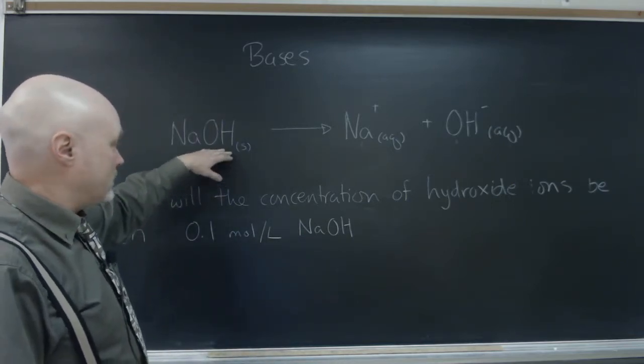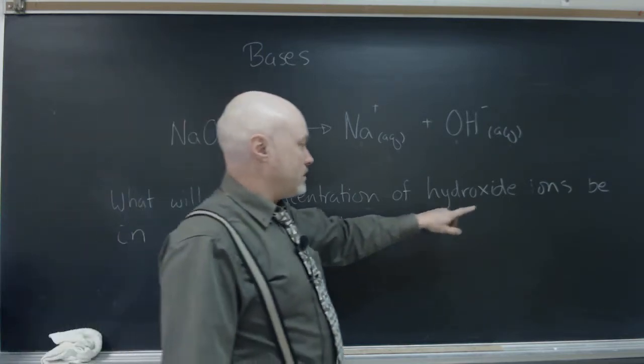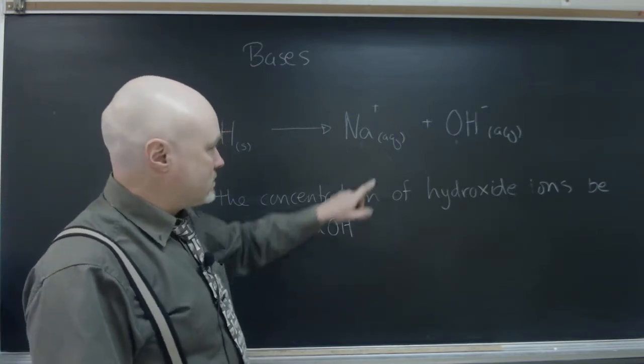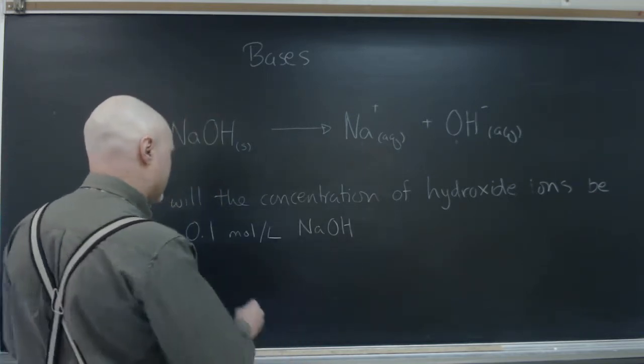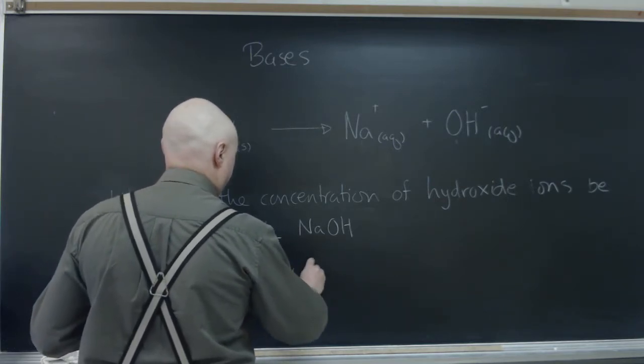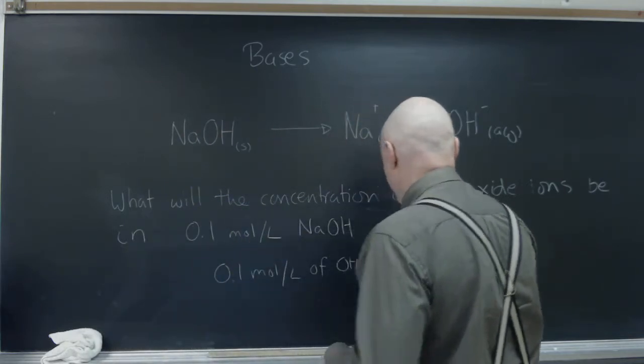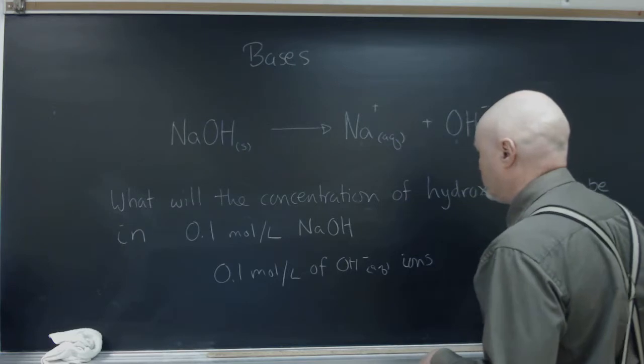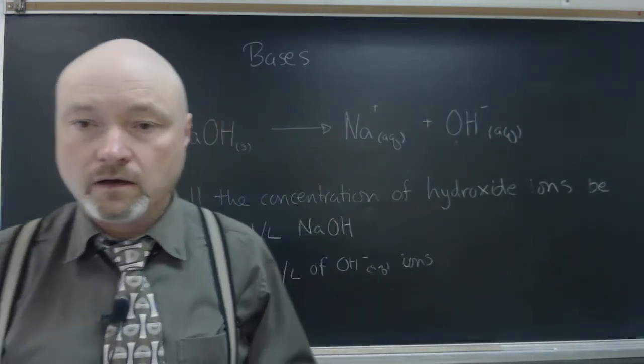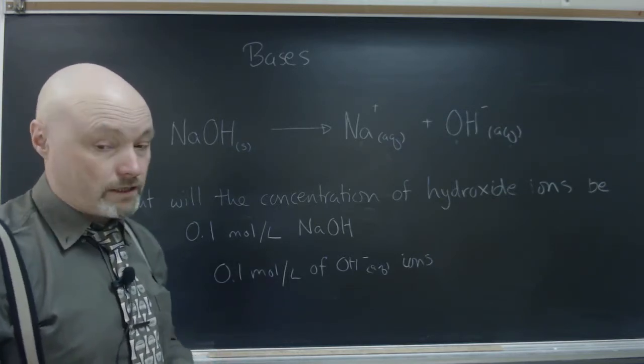So what will the concentration of hydroxide ions be in 0.1 mole per liter sodium hydroxide? Since this is a one-to-one relationship, the answer is 0.1 moles per liter of OH- ions when you put 0.1 moles of sodium hydroxide in one liter of water.